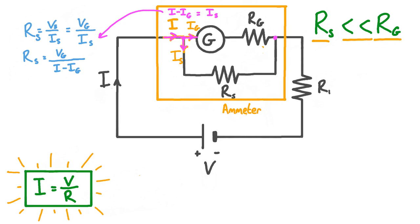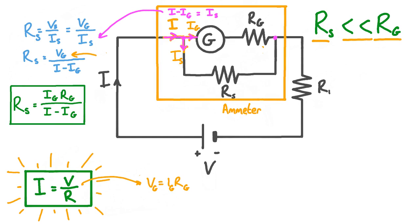Our final step in this derivation is to make a substitution for Vg, the voltage across the galvanometer. Rearranging Ohm's law to make V the subject gives us V equals IR, which means that Vg equals Ig multiplied by Rg. Substituting this in place of Vg, we're left with Rs equals IgRg divided by (I minus Ig), where Rs is the resistance of the shunt resistor, Ig is the current in the galvanometer, Rg is the resistance of the galvanometer, and I is the current in the circuit.